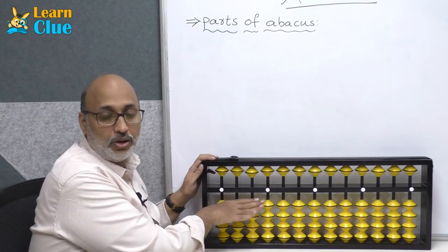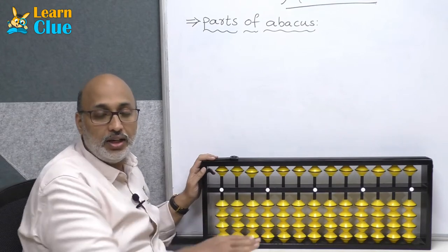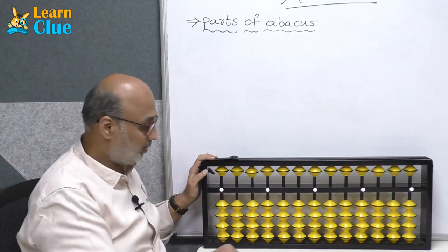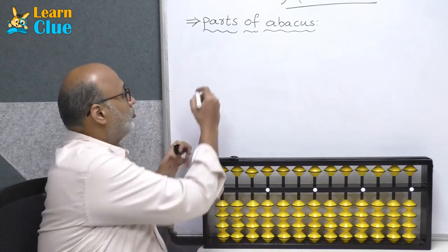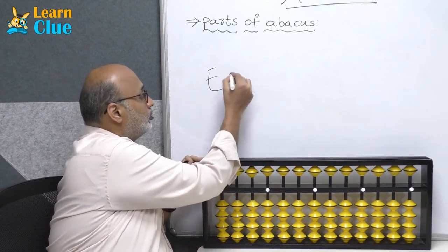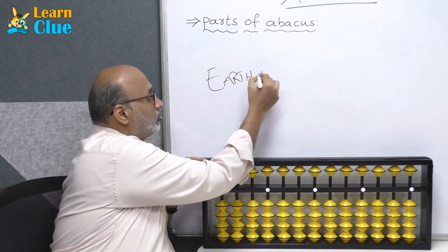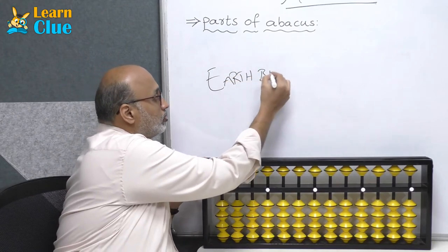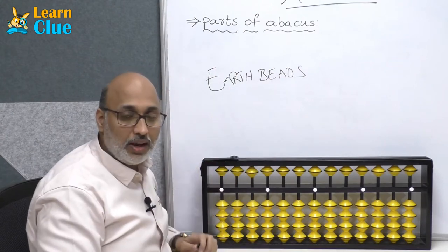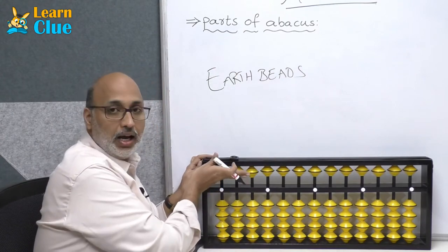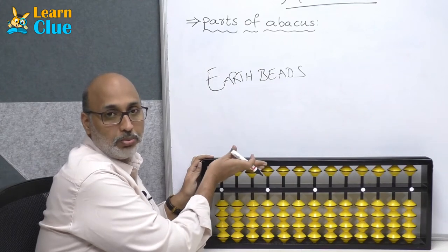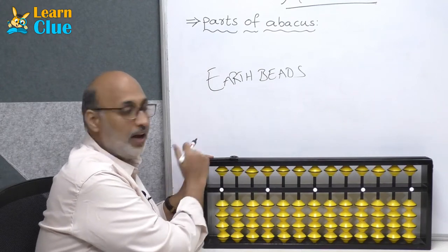Now we will see the types of beads. The beads which are below the unit bar we call earth beads. The beads which are in the upper part, above the unit bar, we call heaven beads.